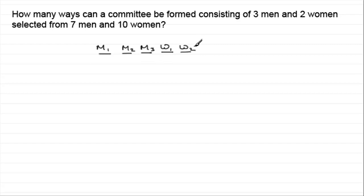So we're interested in having a committee. It's a selection. Order doesn't matter. So when it comes to finding the number of selections that we can have, the number of committees, we need to break this kind of problem down into two parts. We need to think about how many ways we can select the men, and then how many ways we can select the women.